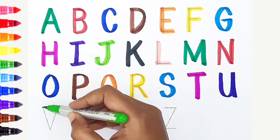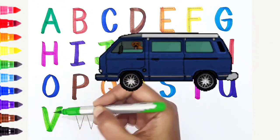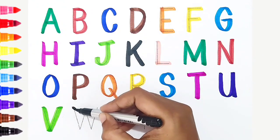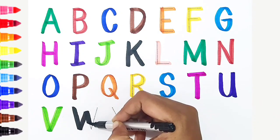V, light green color, V is for van. W, black color, W is for watermelon.